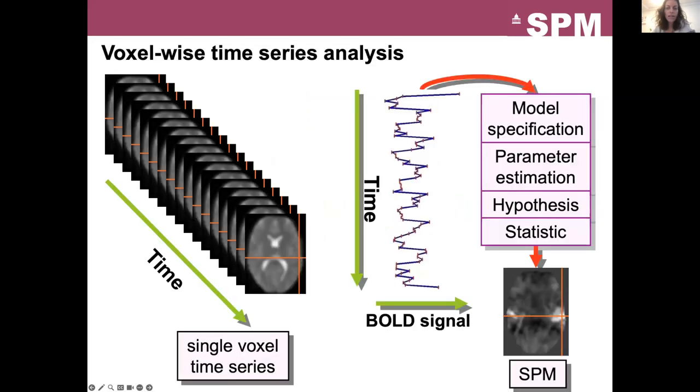The analysis in SPM is performed on each and every voxel. Here is a time series of volume scans in the order of acquisition. And if we take only one voxel on these scans, always the same, we are able to draw the BOLD signal with respect to time of this voxel. A model is then fitted to this signal and parameters of the model are estimated for each voxel. And eventually the statistical test is performed on each voxel.